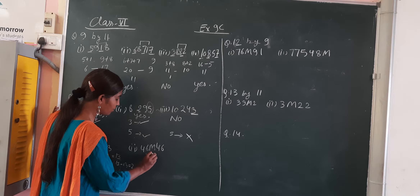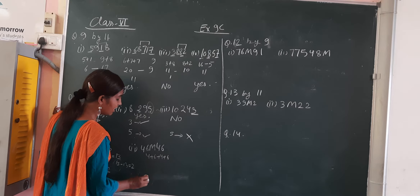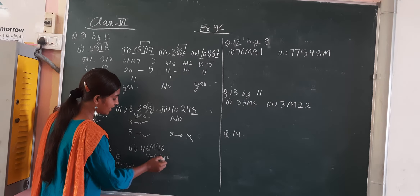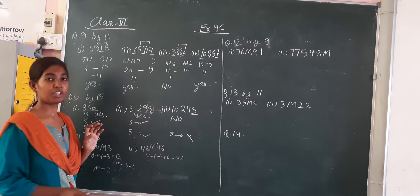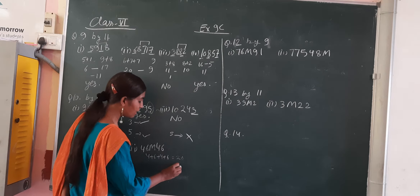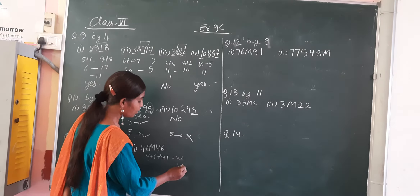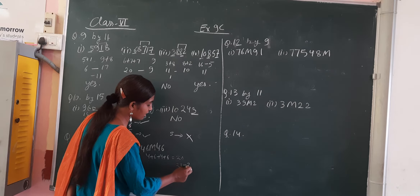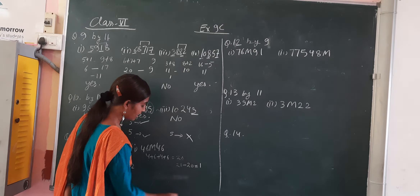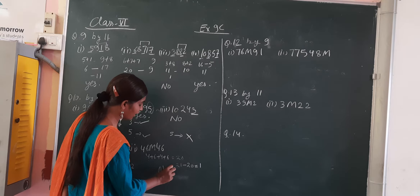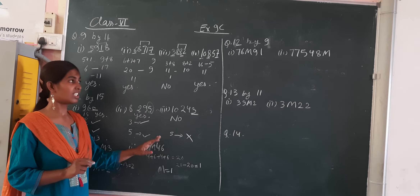Similarly, find digit sum: 4 plus 6 plus 4 plus 6 is 20. 20 is not divisible by 3. The next multiple of 3 is 21. So 21 minus 20 is 1. That means if we put M equal to 1, the number will also be divisible by 3.